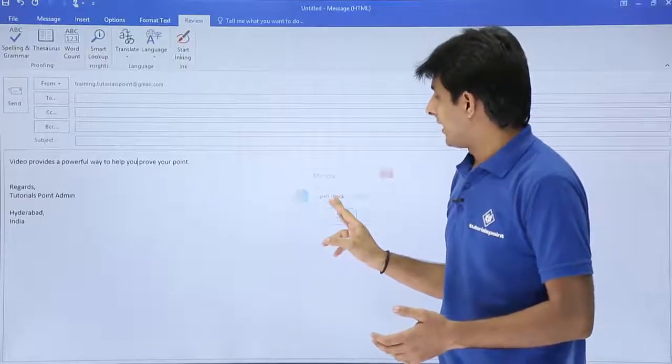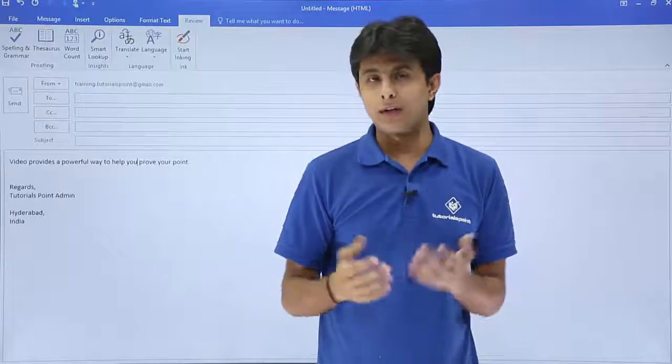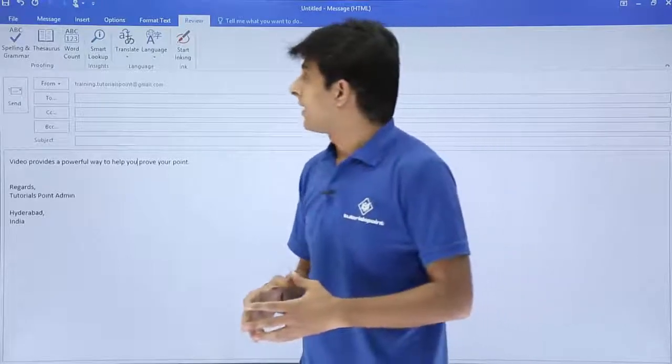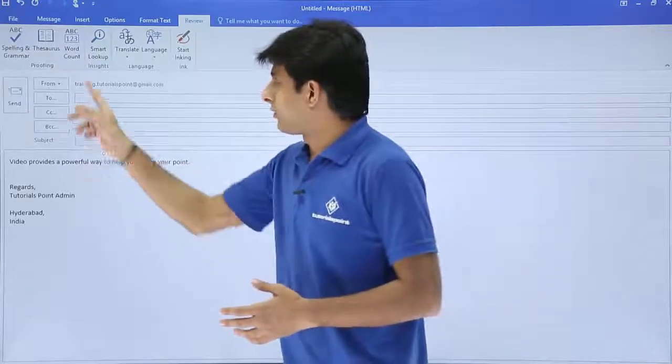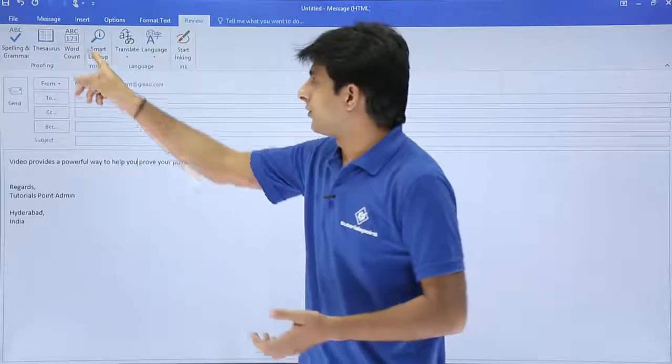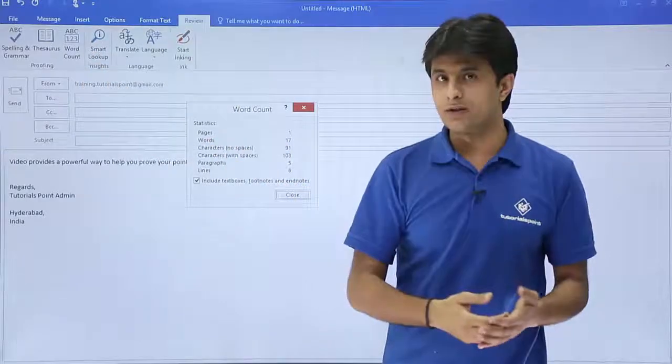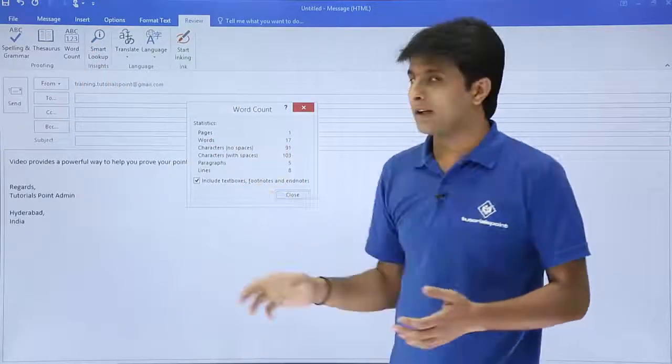This is how the spelling check can be edited in Microsoft Outlook. It works the same like Microsoft Word. There's one more thing if you'd like to know: word count. If you use this word count, it tells you how many pages you have, how many words you have, and all the details you can get at this place.